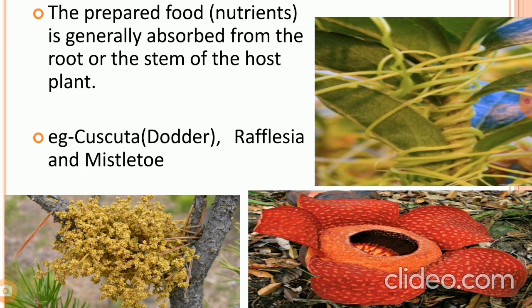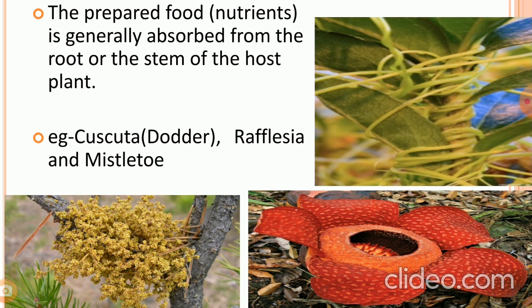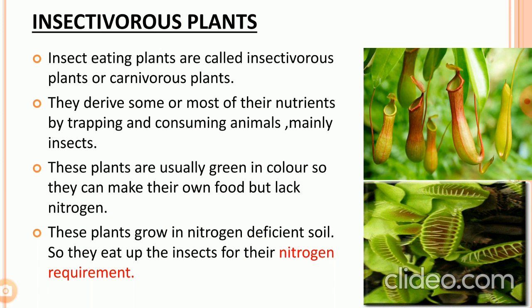The nutrients are generally absorbed from the root or stem of the host plant. The yellow tubular structures twining around the stem and branches of a tree shown in the figure is Amarbele. Some more examples are Rafflesia, which is the largest flower, and Mistletoe, which is a partial parasite. Mistletoe generally grows on mango and teak trees; it has chlorophyll and makes some of its own food but depends on the host for water and certain nutrients.